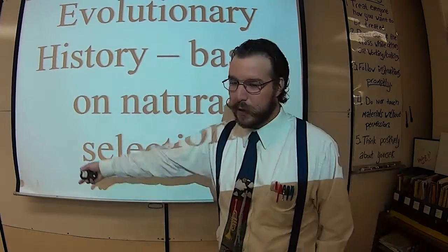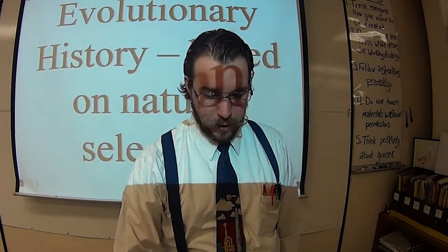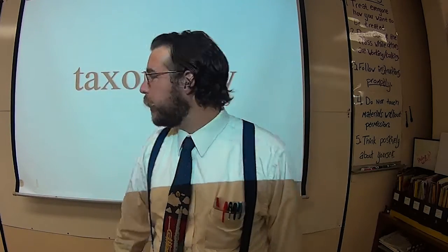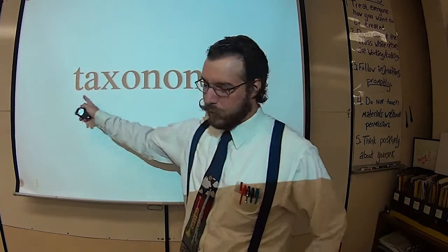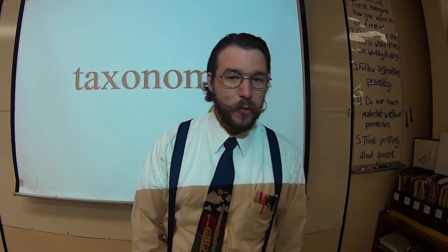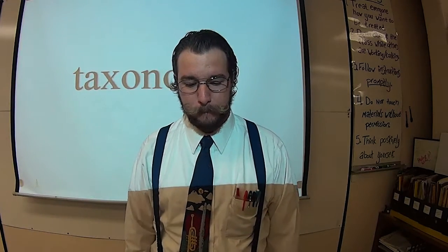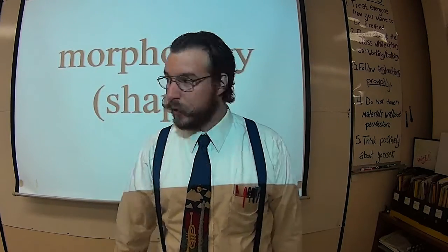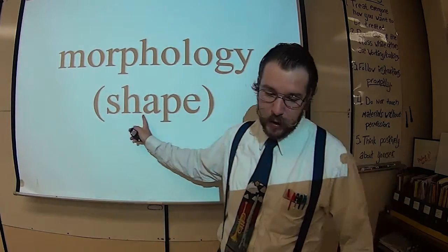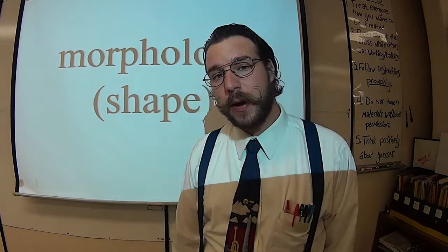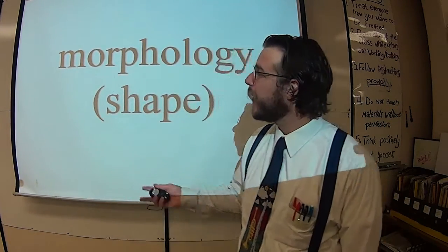That's based on good old natural selection, Darwin's hypothesis. So we're going to talk about new and old. The old system of classification was called taxonomy, based mostly on morphology — mostly how things looked. Now we have a system that we call cladistics.